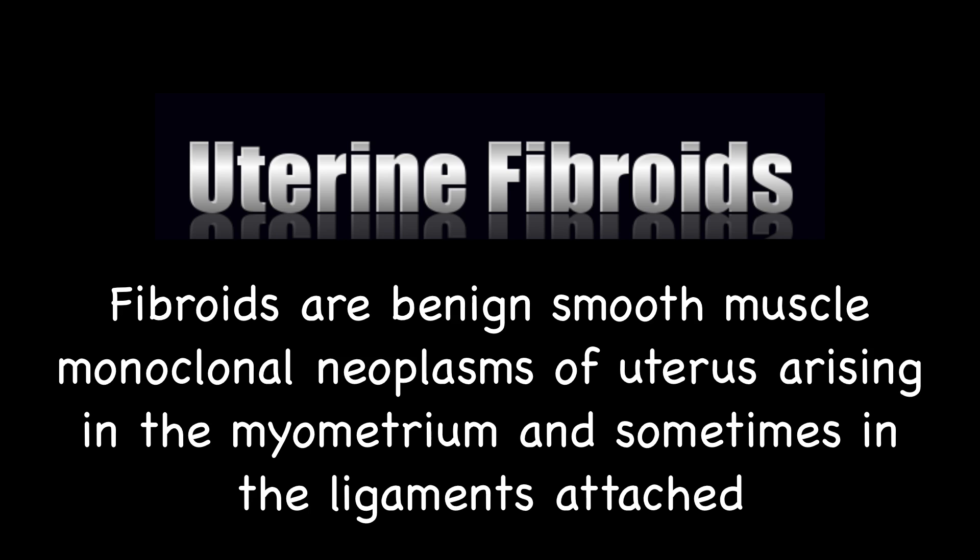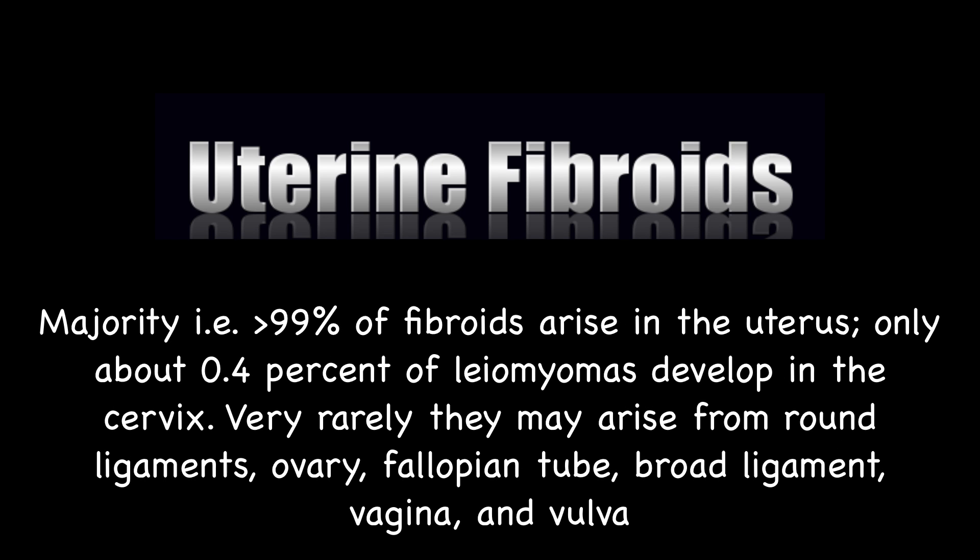Fibroids are benign, smooth muscle, monoclonal neoplasms of the uterus arising in the myometrium and sometimes in the ligaments attached. The majority, that is greater than 99% of fibroids, arise in the uterus. Only about 0.4% of fibroids develop in the cervix. Very rarely, they may arise from the round ligaments, ovaries, fallopian tubes, broad ligaments, vagina, or vulva.